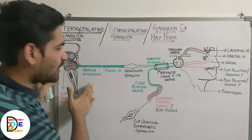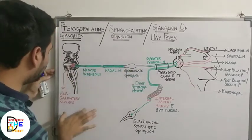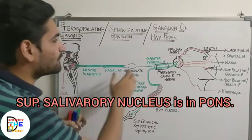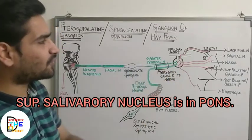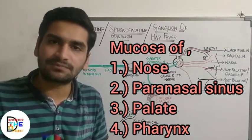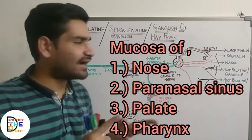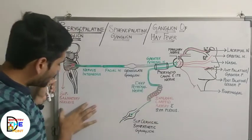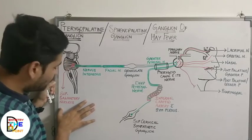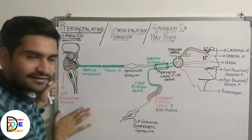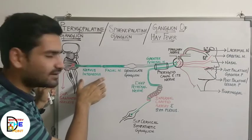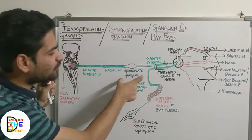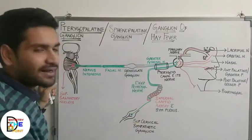The preganglionic fibers for the parasympathetic supply will start from the superior salivatory nucleus, also called the lacrimatory nucleus, because the pterygopalatine ganglion will supply secretomotor fibers for the lacrimal gland along with the mucous glands of the nose, paranasal spaces, pharynx, and palate. The fibers run along the nervus intermedius, which continues as the facial nerve, relaying in the geniculate ganglion, and then continuing forward as the greater petrosal nerve.